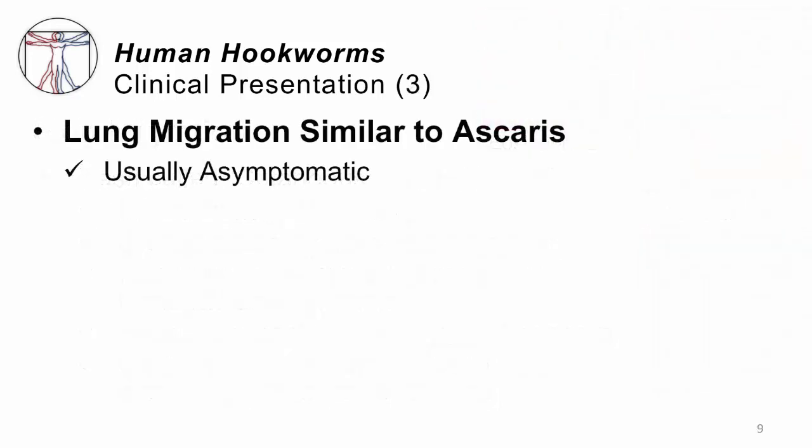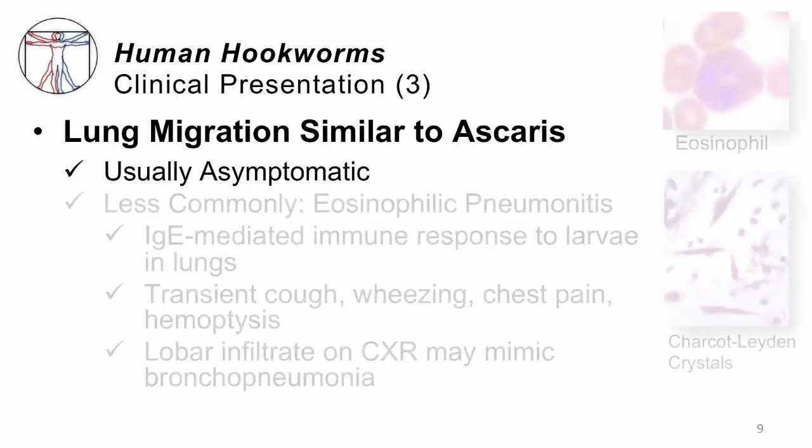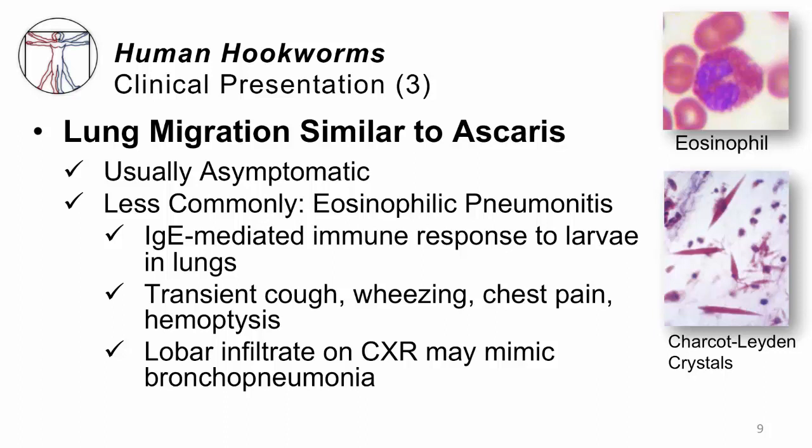Eventually those larvae will migrate to the lungs. When they reach the lungs, we have something similar to Ascaris, the giant roundworm. Most people have no symptoms in the lungs, but sometimes you can have an eosinophilic pneumonitis or inflammatory lung process. IgE is the chemical mediator here, and that can lead to cough, wheezing, and chest pain. On rare occasions, people will actually cough up blood — that's called hemoptysis. If you check a chest x-ray at just the right time, you may see a bronchopneumonia-type infiltrate or shadow. If you look in the sputum, you may see rich eosinophil findings, or in some cases the classic Charcot-Leyden crystals. All of this tells you there are a lot of eosinophils deep in the lungs. Just like with Ascaris, we call this Löffler's syndrome.